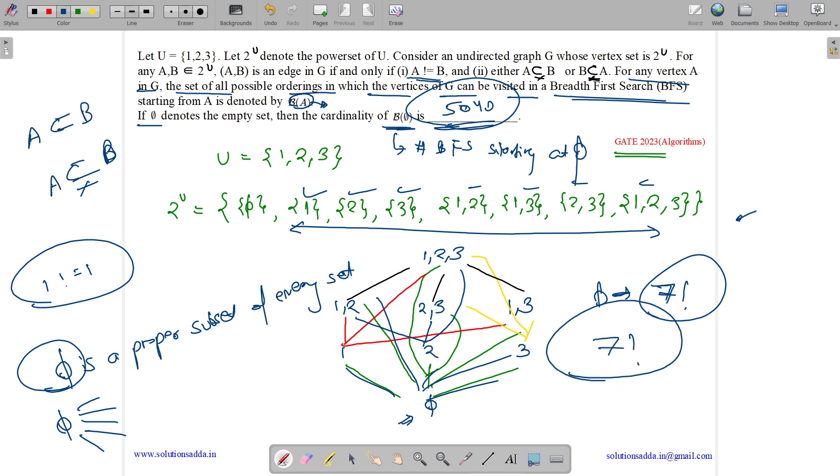Let us calculate 7 factorial. It is 7 into 6 into 5 into 4 into 3 into 2 into 1, which equals 5040. So the answer basically is 5040. So the main point is that phi is a proper subset of every set, which means from phi we can go to any other set and they can be organized in 7 factorial ways.